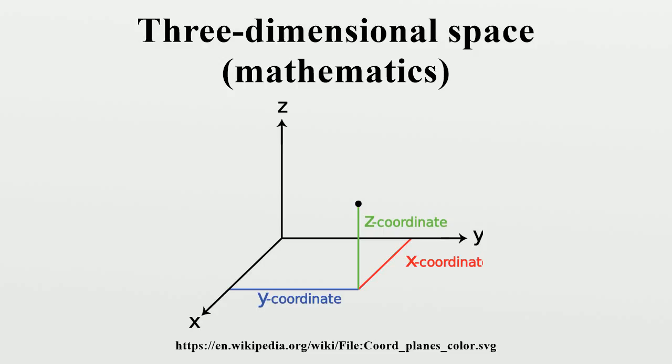Relative to these axes, the position of any point in three-dimensional space is given by an ordered triple of real numbers, each number giving the distance of that point from the origin measured along the given axis, which is equal to the distance of that point from the plane determined by the other two axes.